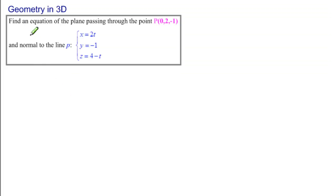The problem reads: find an equation of the plane passing through the point P(0, 2, -1) and normal to the line p: x = 2t, y = -1, and z = 4 - t.